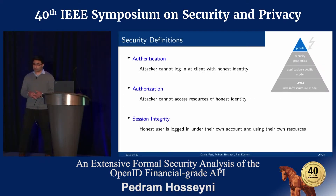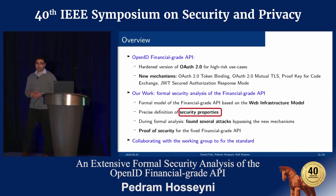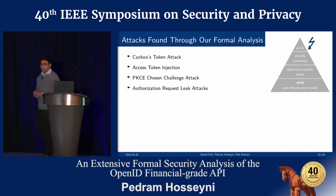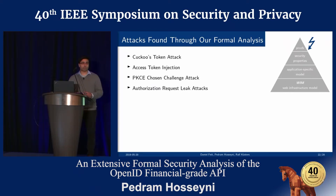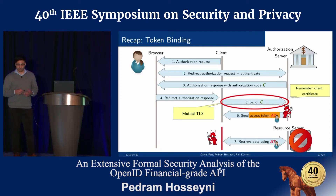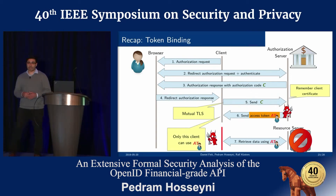We wanted to prove that these properties hold true; however, we were not able to do so initially and found several attacks, not only on the Financial Grade API itself, but also on some of the basic security mechanisms. We found four attacks. In this presentation I will show you the first attack, the Cuckoo's Token Attack. By token binding, for example using Mutual TLS, an access token can be bound to a client, which means that only this client can use this access token.